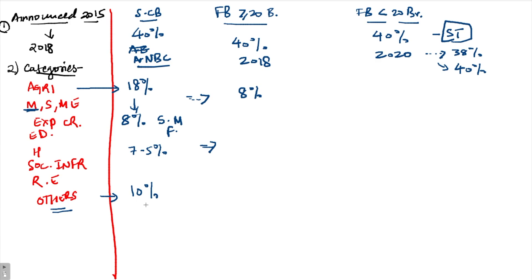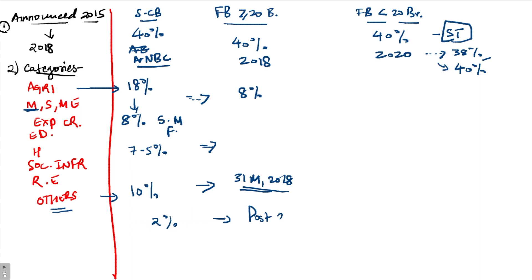The third sub-target is for weaker sections, which comes under 'others'. For scheduled commercial banks, the sub-target is 10% of adjusted net bank credit. For foreign banks with 20 or more branches, this was to be achieved by 31st March 2018. For foreign banks with less than 20 branches, an additional 2% of adjusted net bank credit post-2020 has not yet been decided.